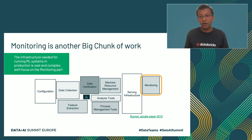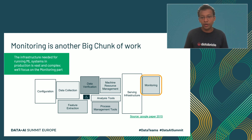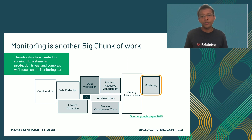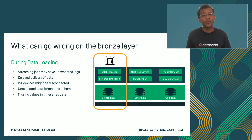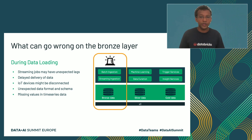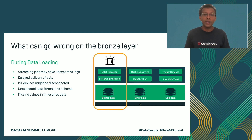To highlight how important monitoring is — this is a paper published by Google in 2015, and you've probably seen this diagram in many Databricks presentations. As you can see, to run a machine learning algorithm, you need quite a lot of components. One of the biggest components, as you can see from this diagram, is monitoring. That's why we are really focused on talking about monitoring in this presentation. Before implementing your monitoring system, it's critically important to understand what can go wrong in your data pipeline. In our case, in the bronze layer, the streaming jobs might have unexpected lags. If you don't have enough resources, Spark streaming might work but you might not notice if there's a lag unless you have a proper monitoring system.